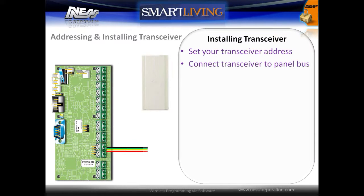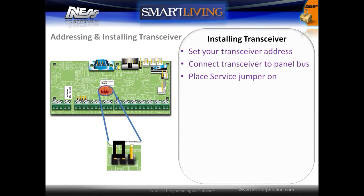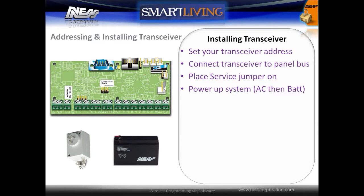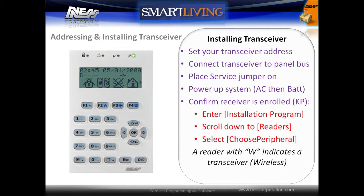To install a transceiver, first set the address on the transceiver and connect to the system's bus. Next, place the system into service mode so the transceiver can be automatically enrolled. Power up the system, first applying AC power and then connecting the battery. Then confirm the receiver is enrolled by going into the keypad's installation programming menu, scrolling down to readers and then selecting choose peripheral. A reader with a W indicates a wireless transceiver.